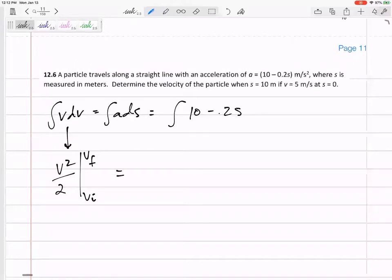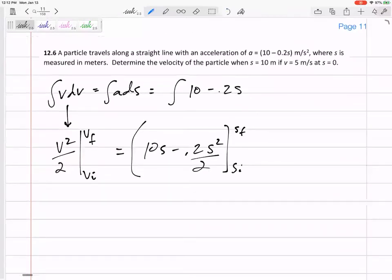And then the integral would be 10s minus 0.2s squared over two. And this one is also from S initial to S final. I do have an initial velocity of five, so that's the initial velocity of five. And so this would be like VF squared over two minus five squared over two.